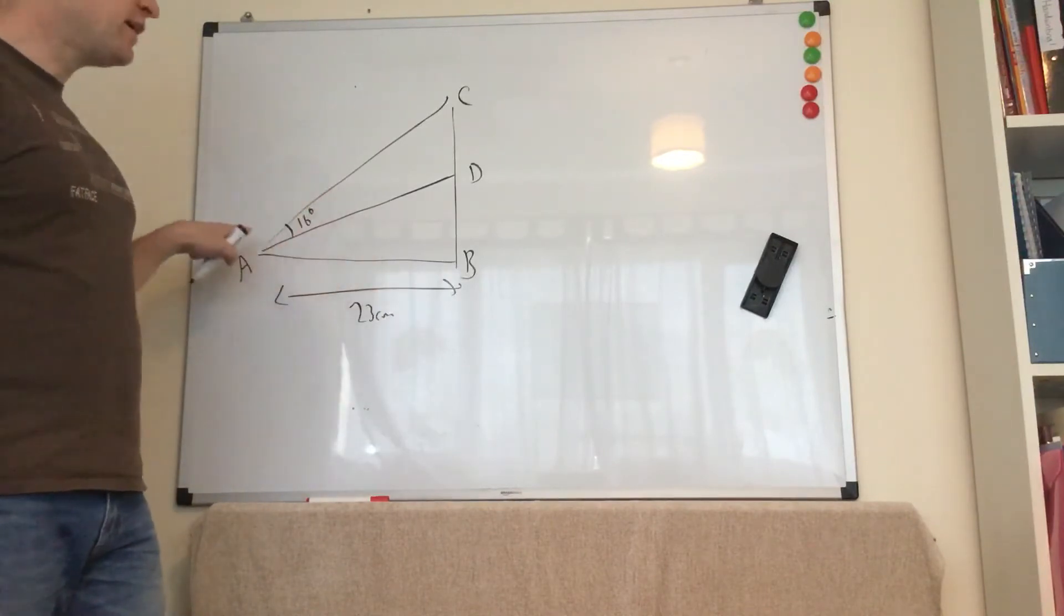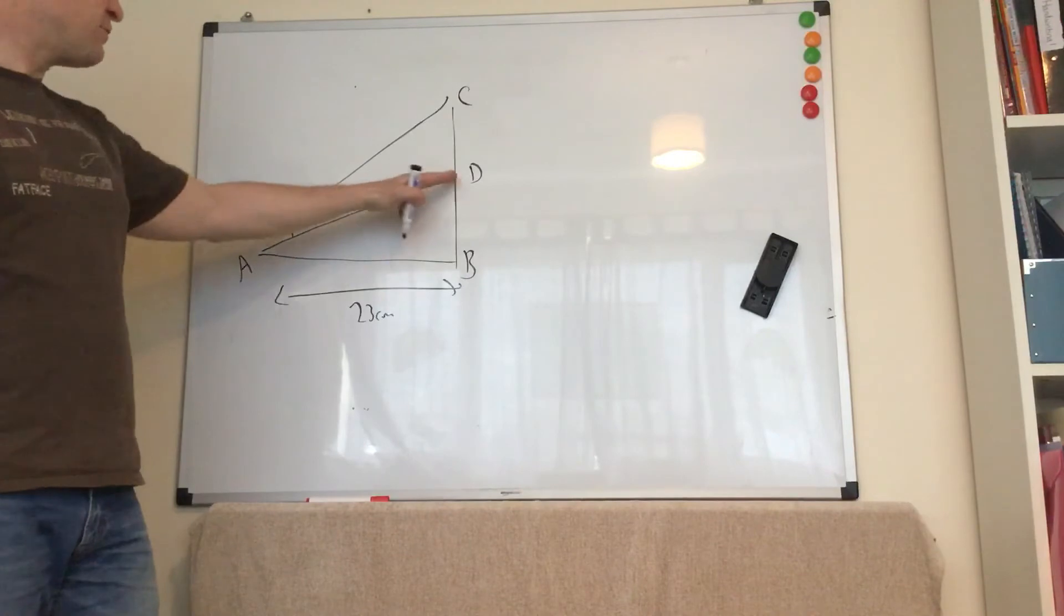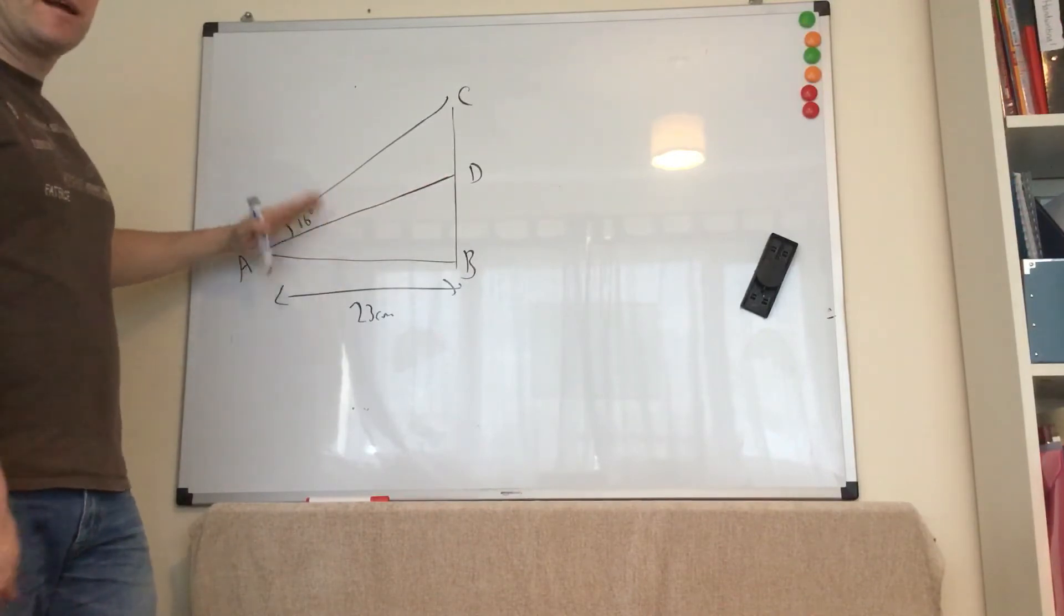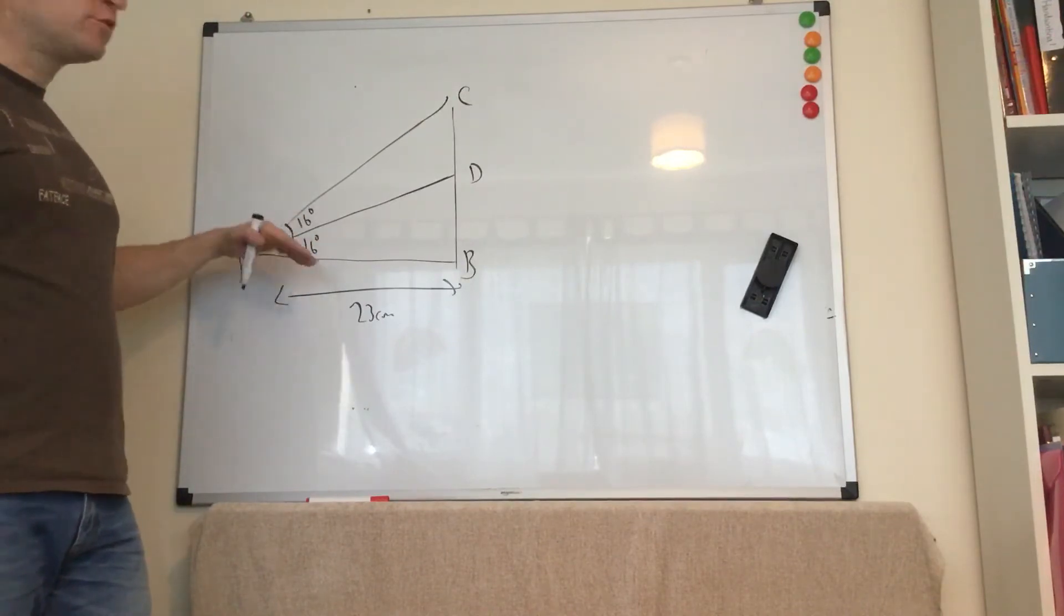We get told that the line AD bisects the angle CAB. So if it bisects this angle, it means it chops it in half. Which means this angle here must be half of the whole angle, and this angle here is half of the whole angle. So that must be 16 degrees as well, and the whole angle must be 32.